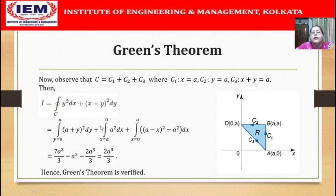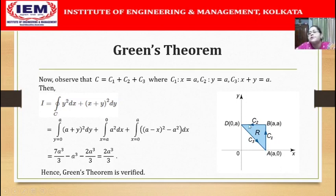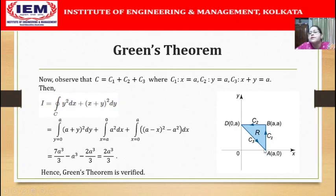Along C2, where y equals a, dy equals 0, so the second term vanishes and we are left with y² dx. Since y equals a, this is a² dx, and as we travel from B to D along C2, x varies from a to 0.